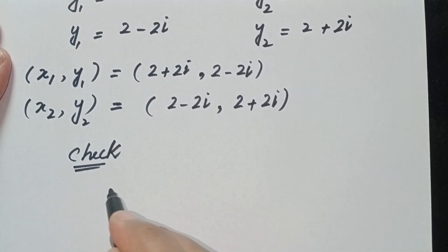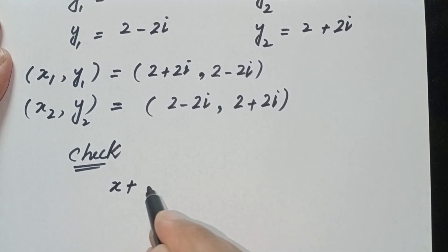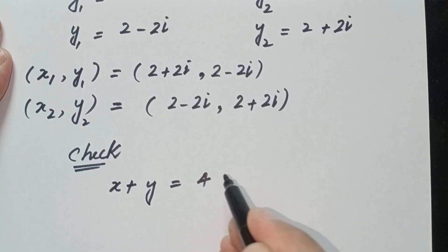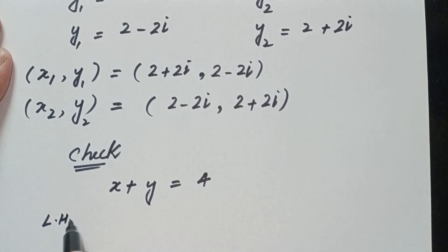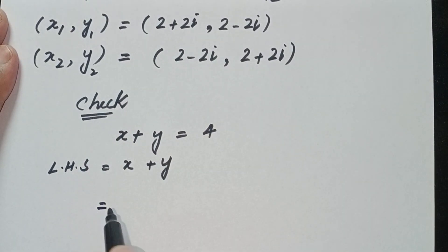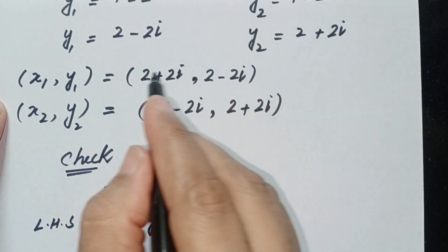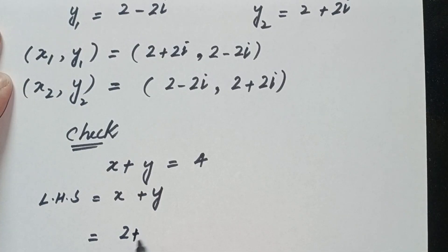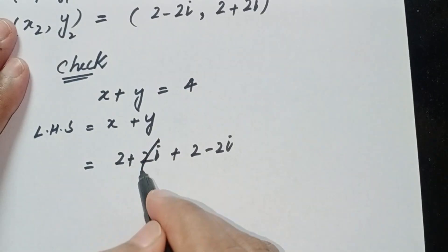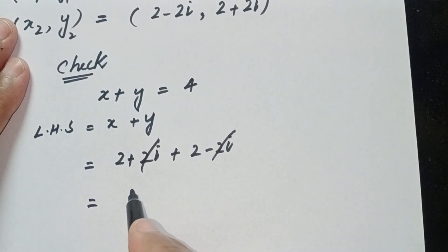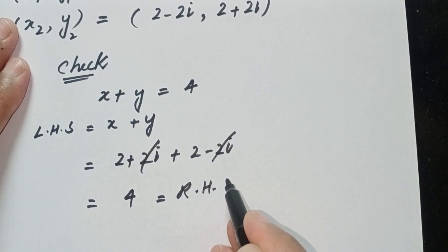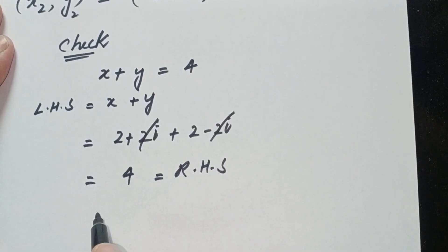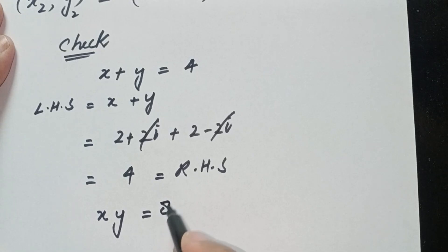We need to check our equation x plus y equals 4. Taking the left-hand side: x plus y = (2 plus 2i) plus (2 minus 2i). The 2i terms cancel and we get 4, which equals the right-hand side. The first equation is verified.